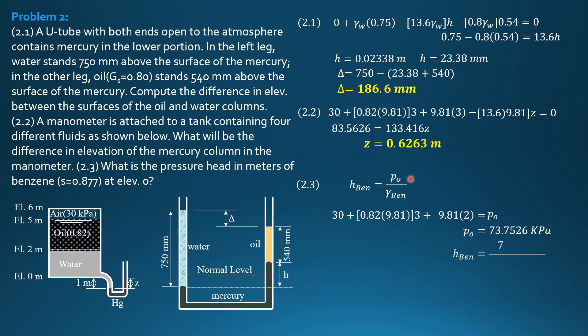Substitute here, height of benzene is 73.7526 divided by 0.877 times specific weight of water. So the height of benzene is 8.573 meters. So this is the pressure head in meters of benzene at elevation zero.